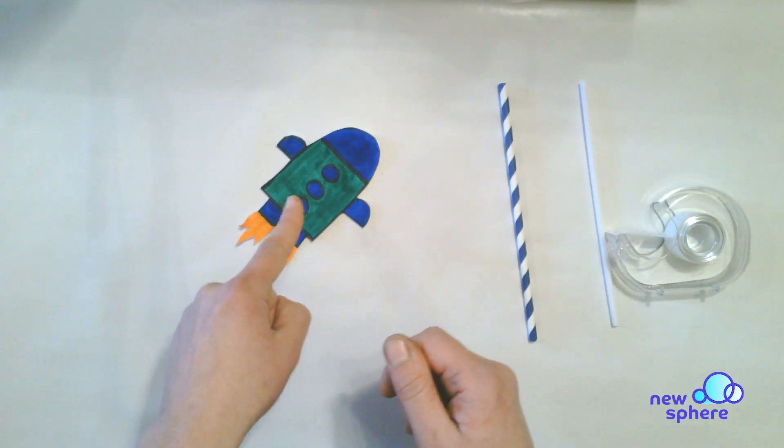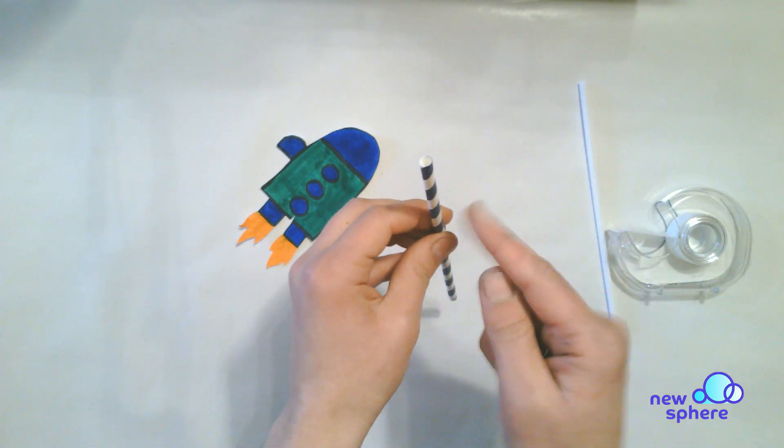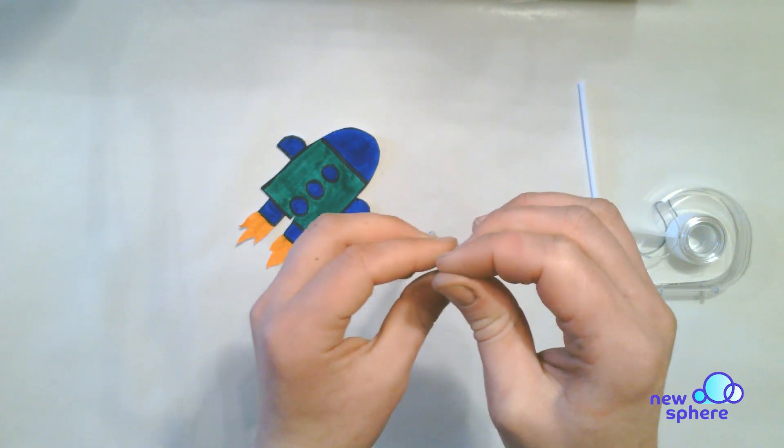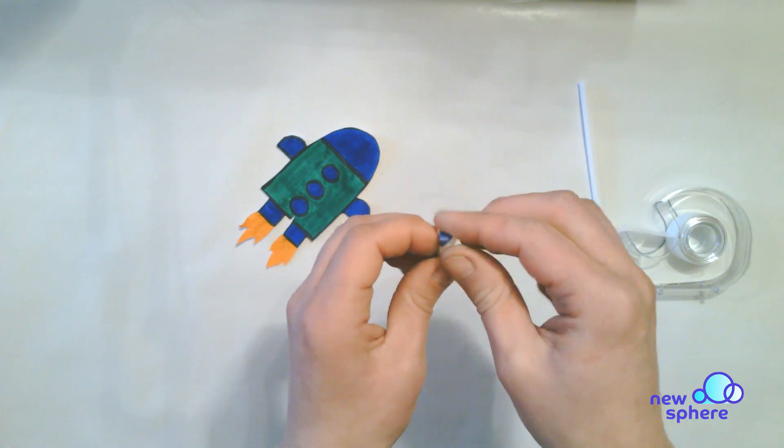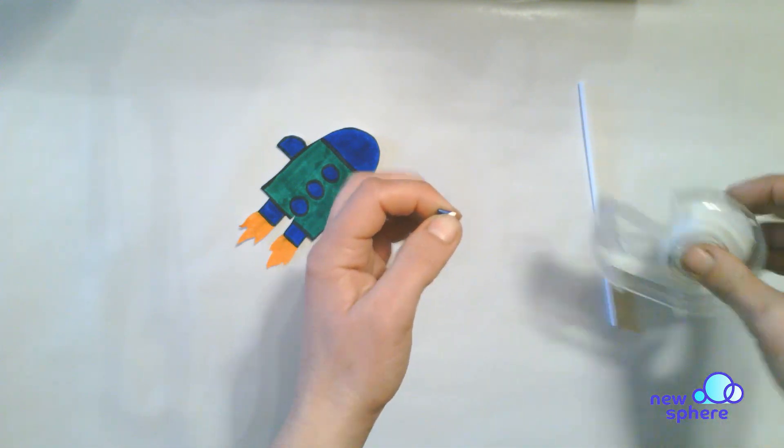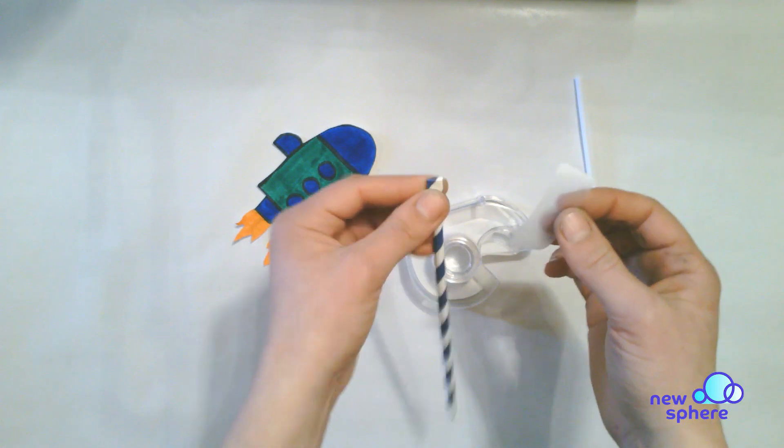Once you have cut out your rocket, take the straw that is wider than the other straw, the one that goes on the outside, and pinch the top. Then bend it down and tape it. Make sure that it's taped and sealed really nicely so that no air can get through.